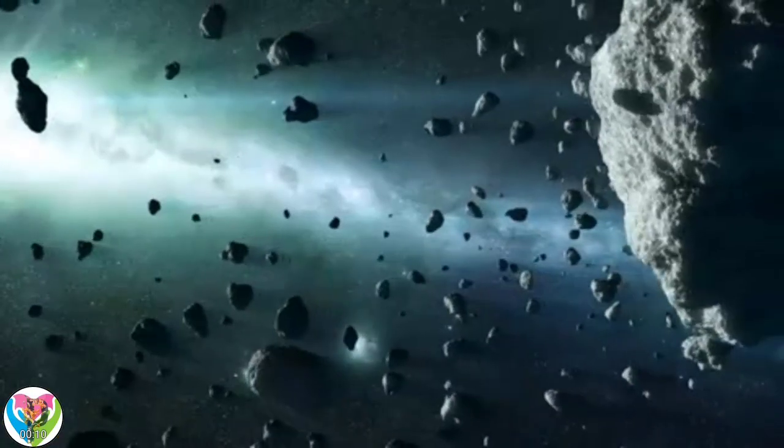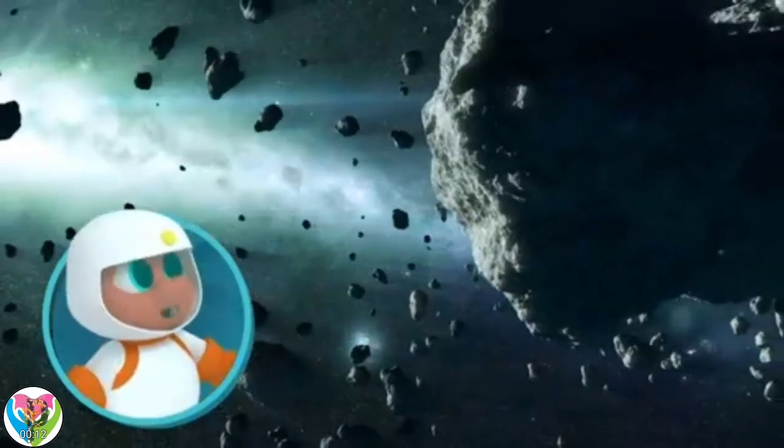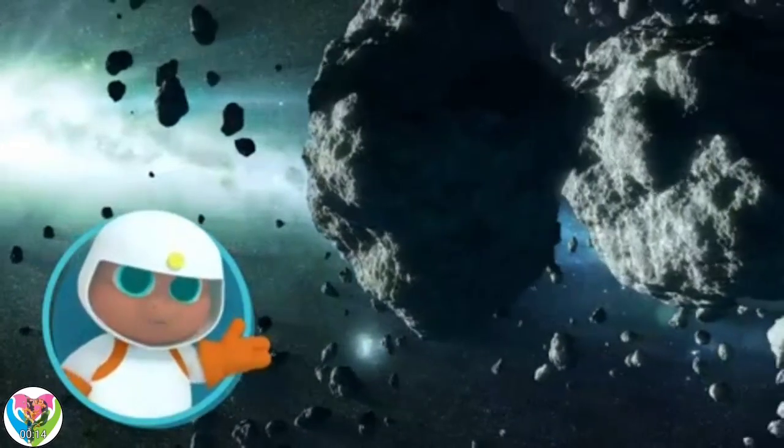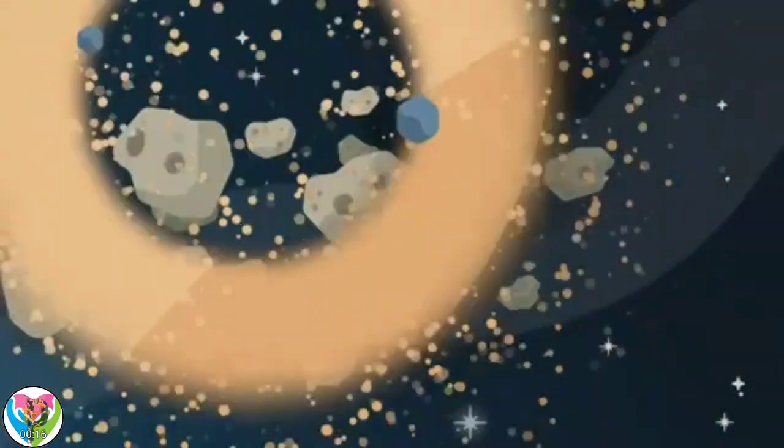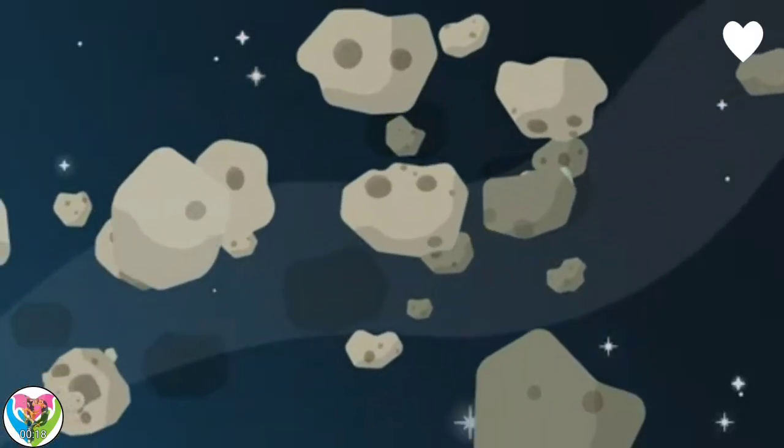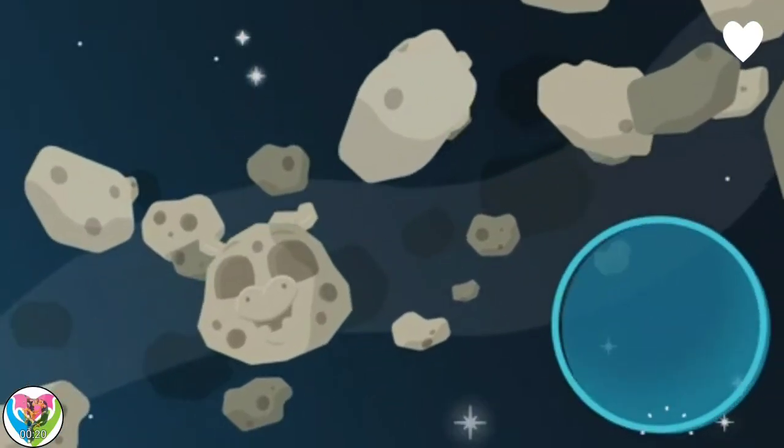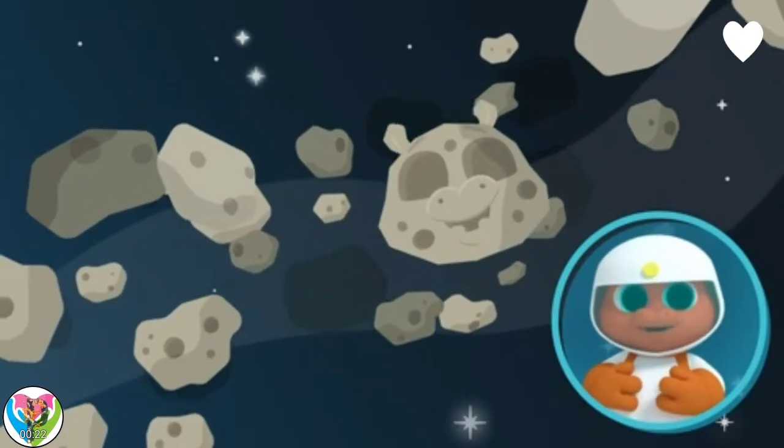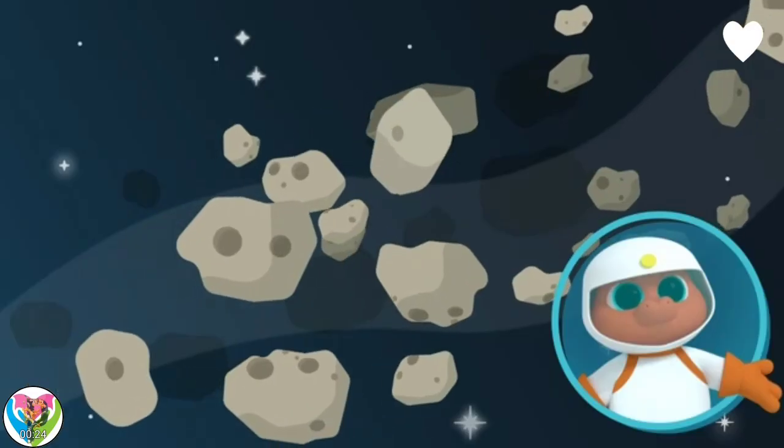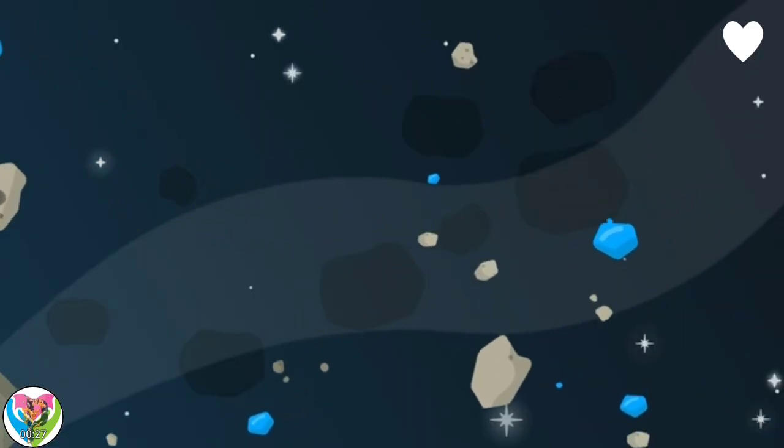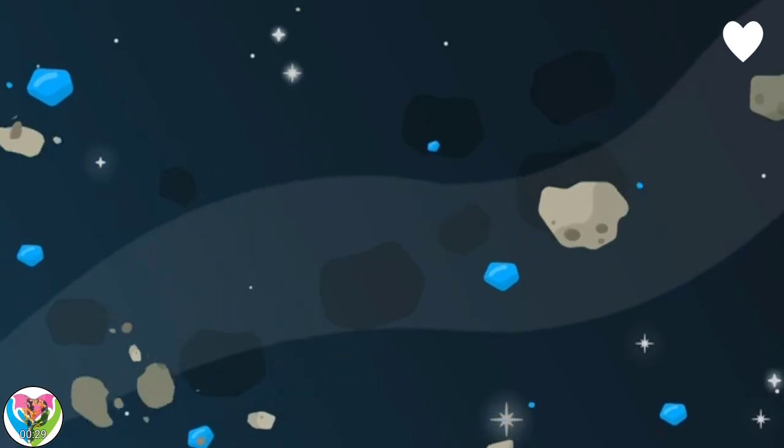Asteroids are rocks floating in space. I've never seen an asteroid before. Asteroids come in all shapes and sizes, some as small as a hippo. Scientists think asteroids are just leftover pieces from when the solar system was first created.